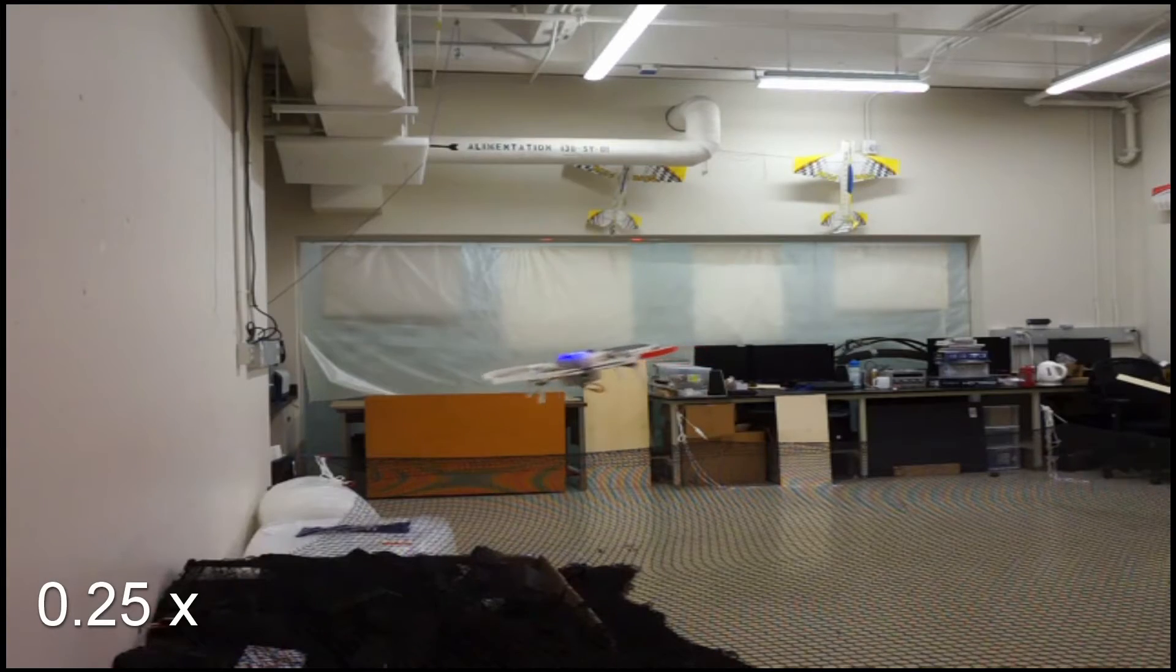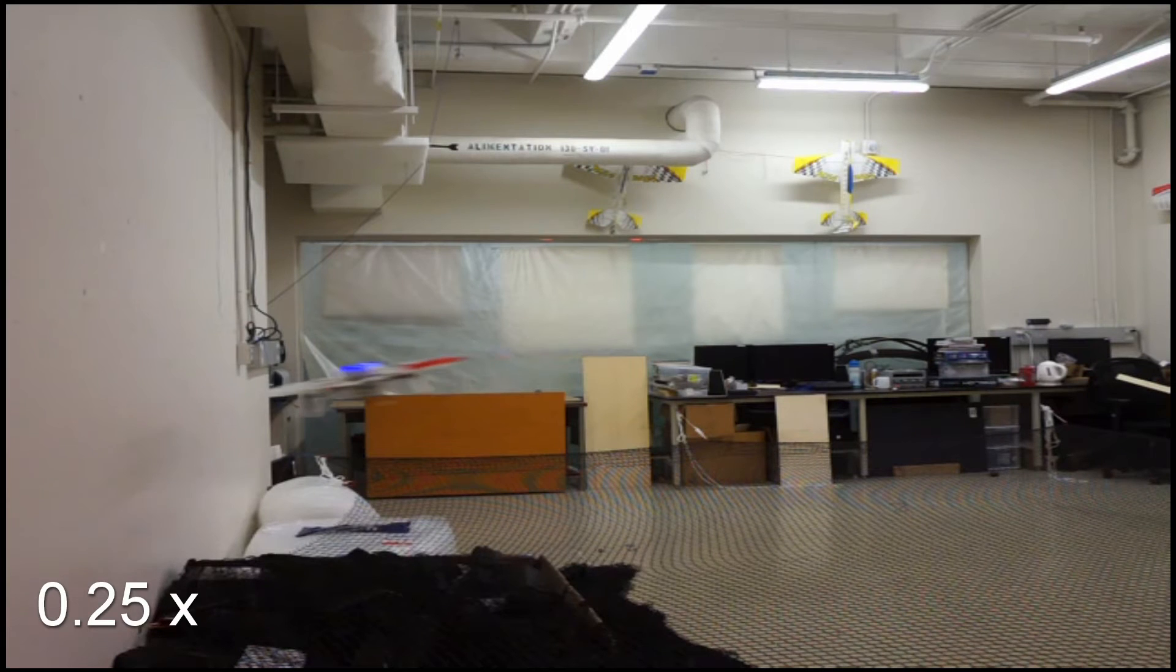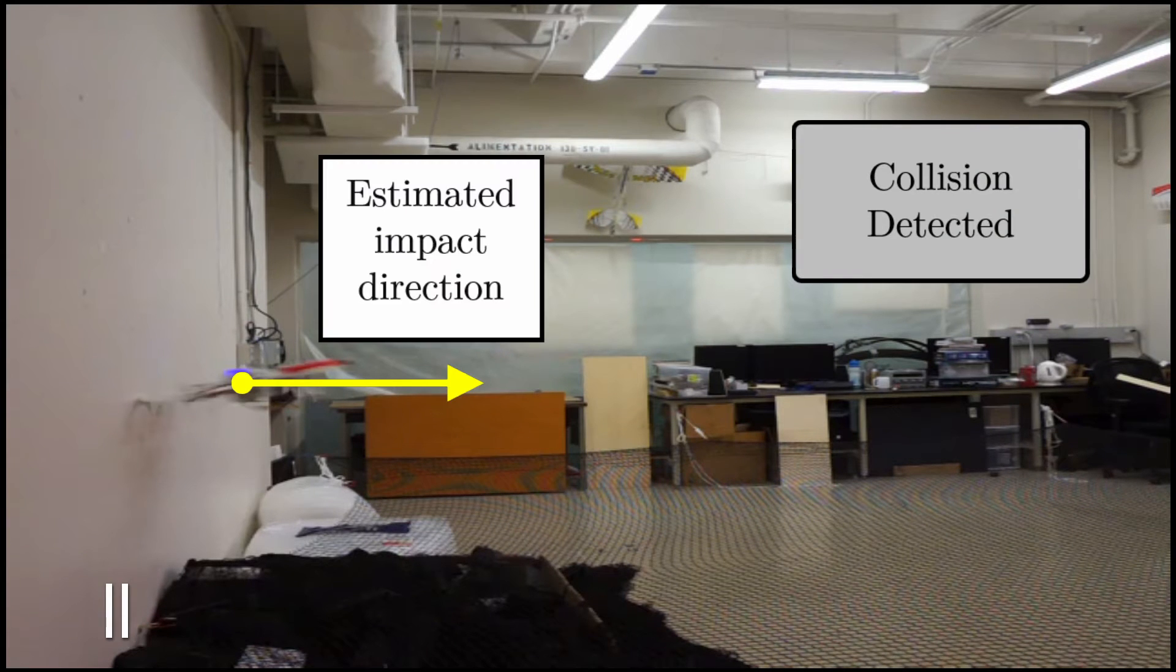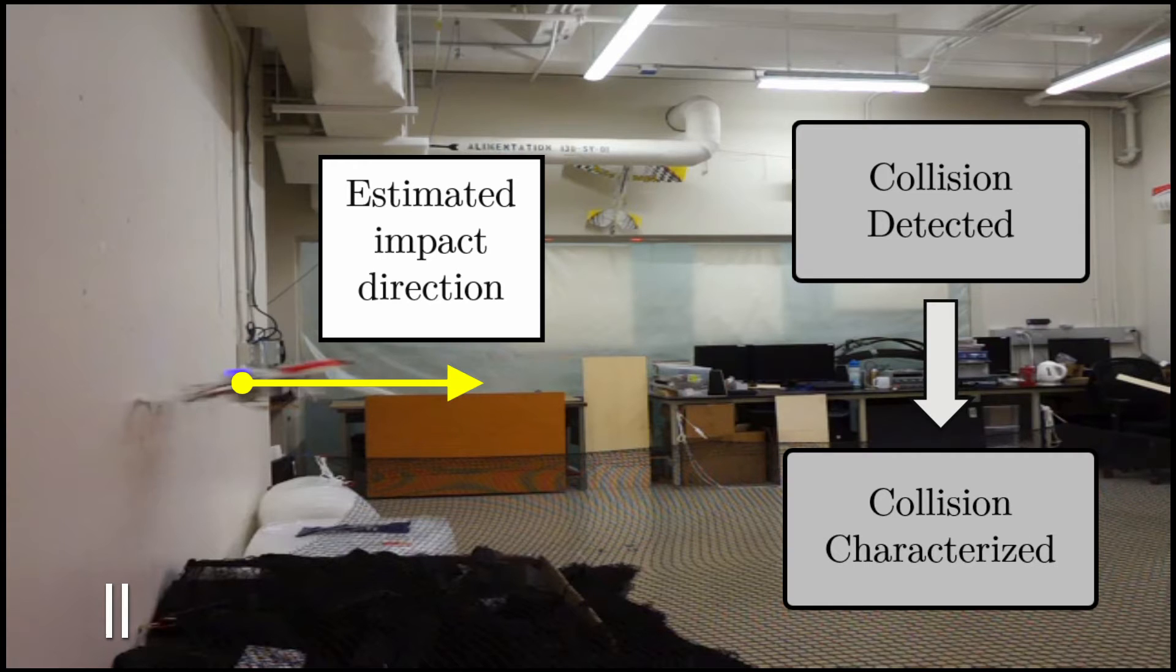The quadrotor first detects the collision using an accelerometer and estimates the direction of the impact. Fuzzy logic is then used to quickly characterize the intensity of the collision.